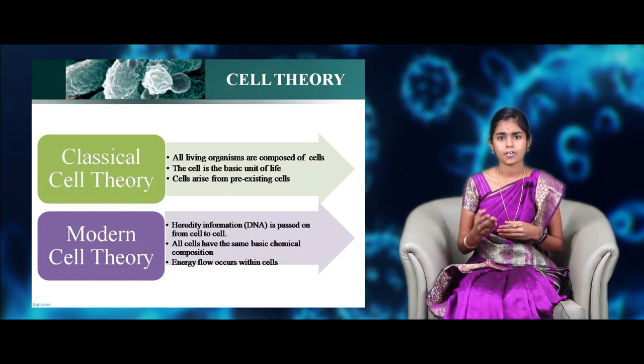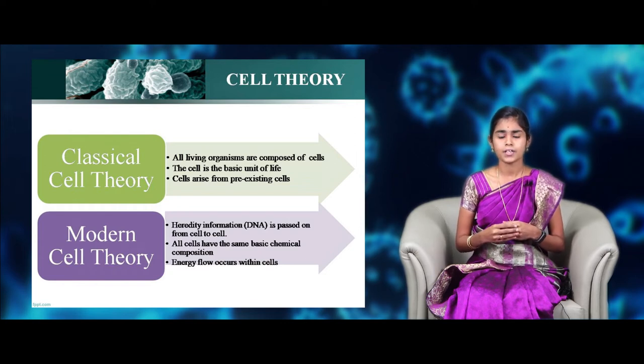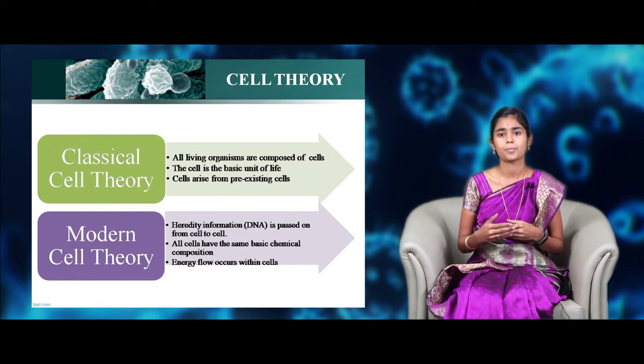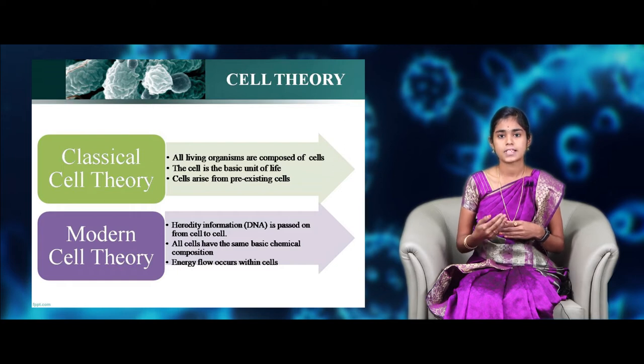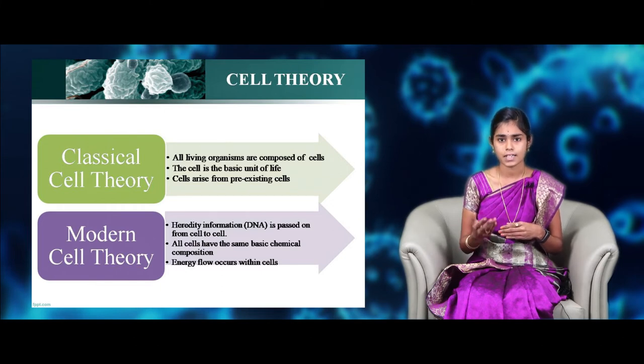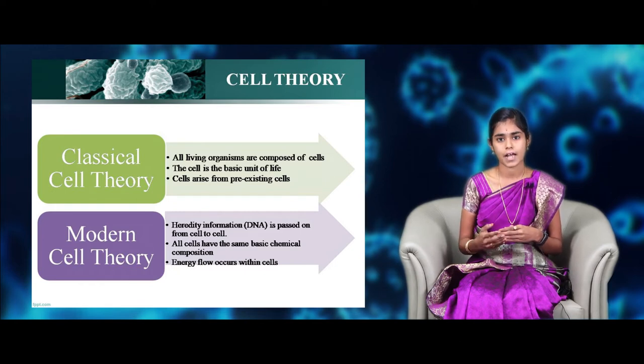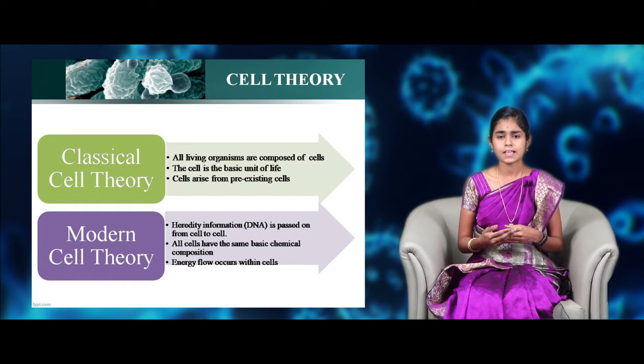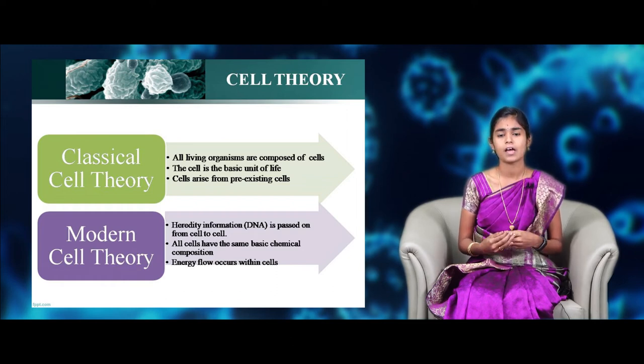After that, many technologies have improved and new discoveries are there. That new findings have proposed new modern cell theory. Those three additions are all cells of the organisms within the similar species have almost similar characters, structure and chemical nature and all energy flow occurs within the cells. And finally, very major thing is that DNA in a cell is passing between the other cell during the cell division and this leads to the genetic information transfer from parents to offspring. And these are the basic theories that we are following till today.